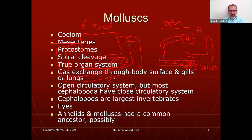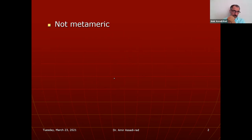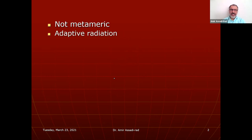Annelids and molluscs had a common ancestor, possibly because of the coelom and because of their larval stages — they have similar larval stages. There is no metamerism in molluscs; they are not divided into body segments like annelids, chordates, or arthropods.